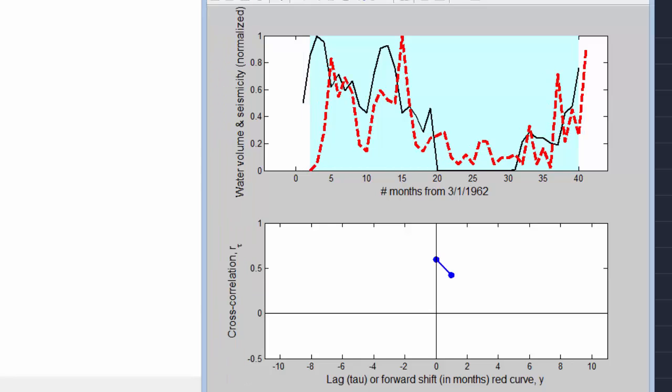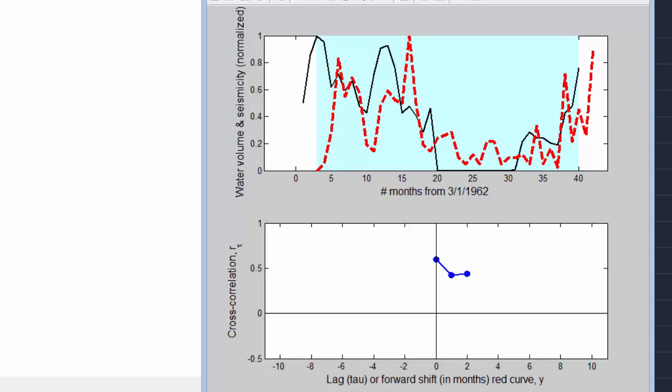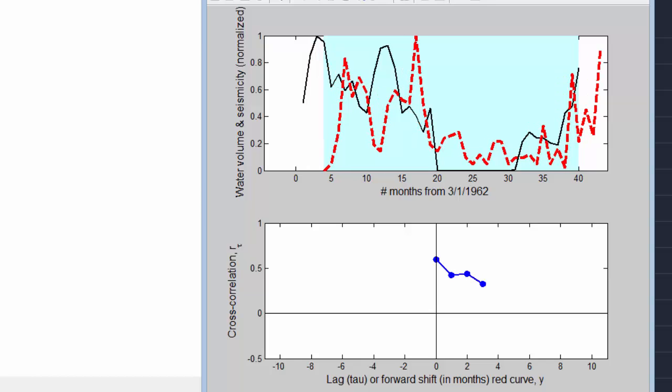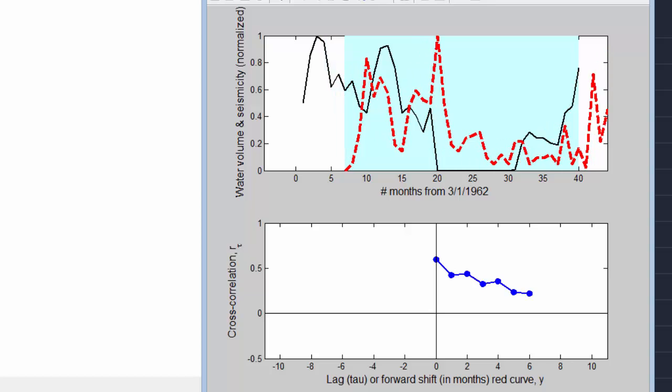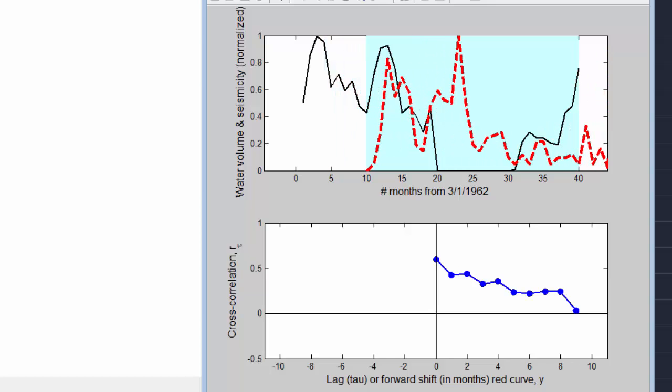So as we apply a lag you can see that I'm shifting the seismicity function later in time relative to the pumping record. And with increasing lag you can see the correlation starting to decrease until there is very little correlation in the record.